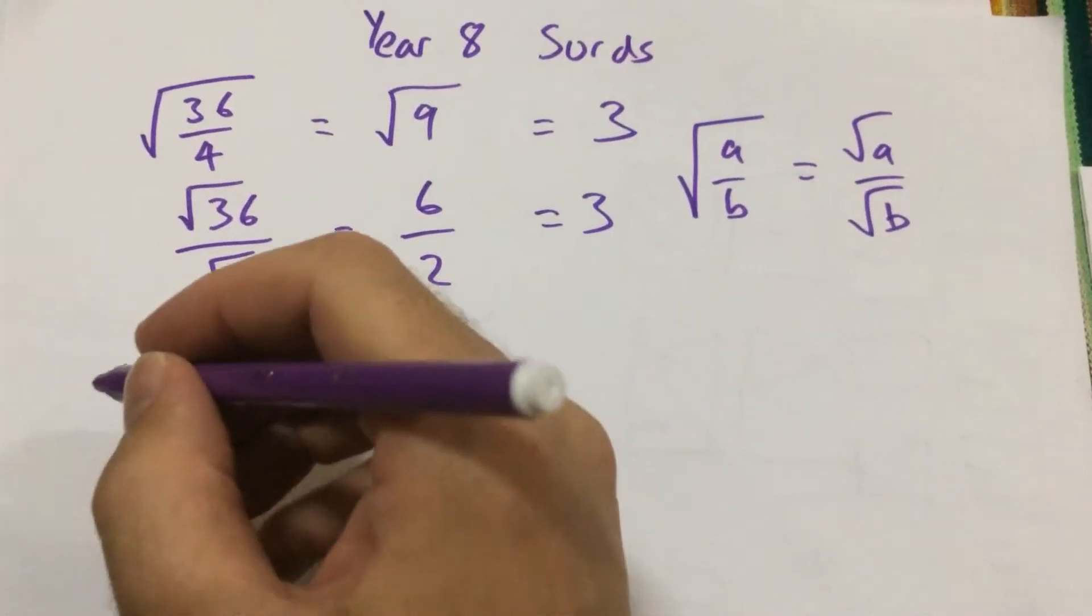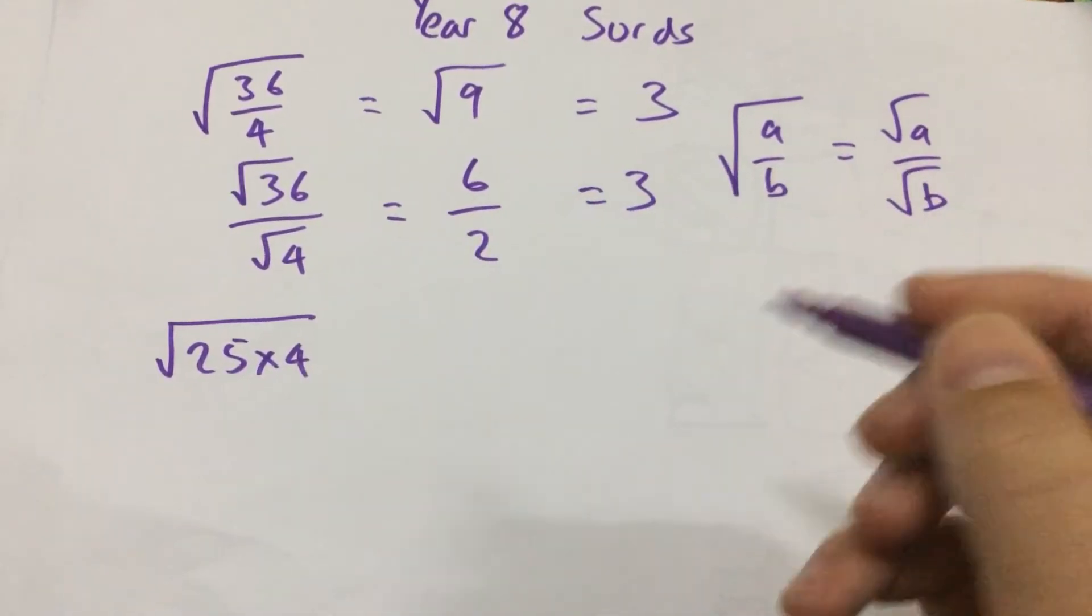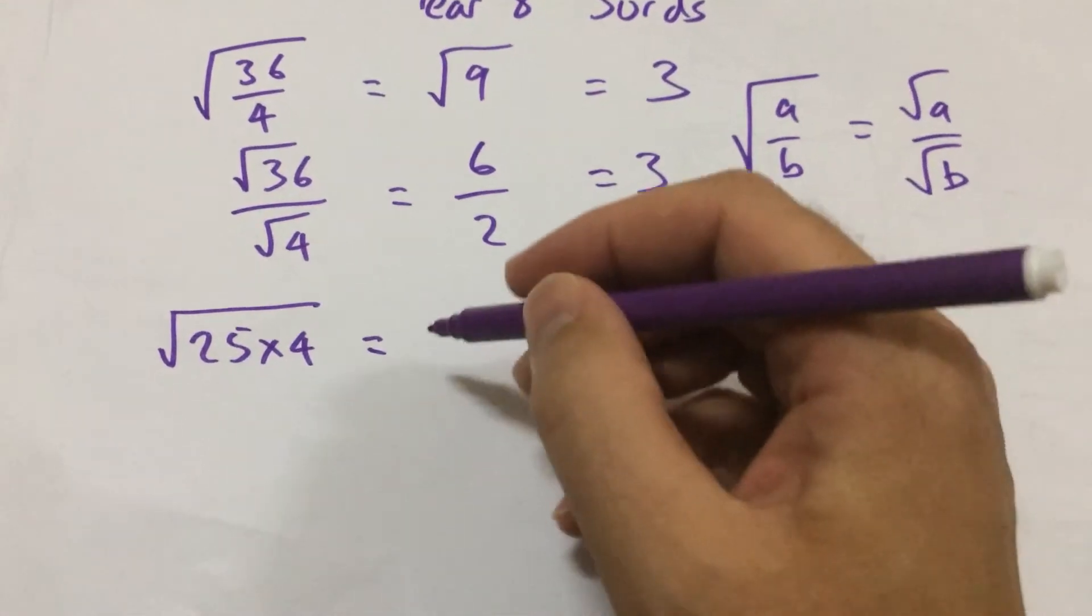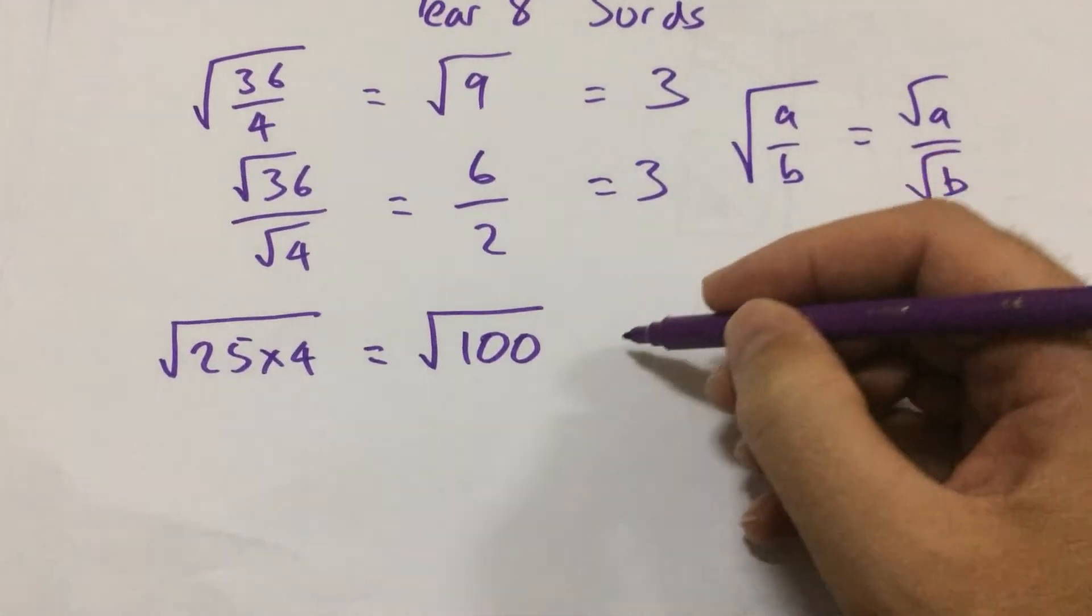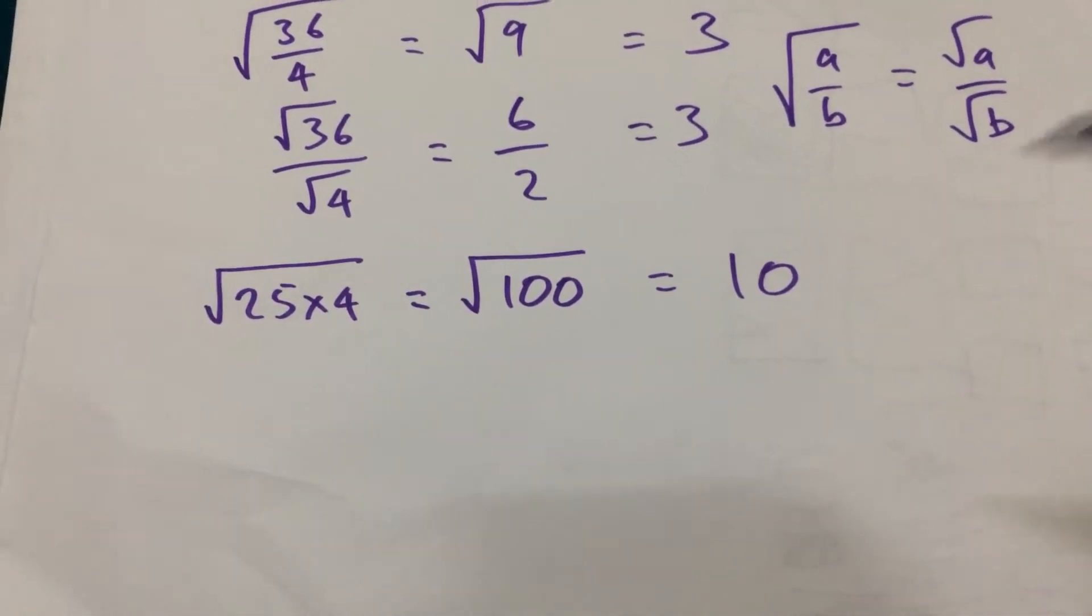Let's look at some multiplication. Let's say we've got root of 25 times 4. We know 25 times 4 is 100, and the square root of 100 is 10.